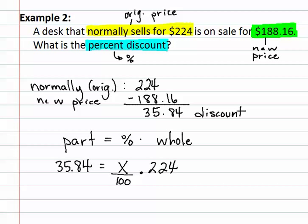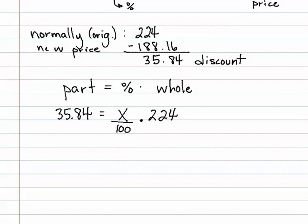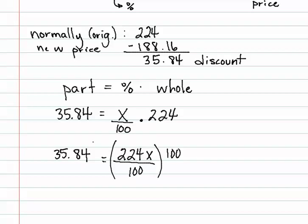We now proceed to solve this problem. As you can see, there is a fraction still here. We must multiply. When we multiply, we get 224 x over 100 equals 35.84. Remember to clear a fraction, you multiply by the least common denominator. The least common denominator in this case is 100. We will multiply both sides by 100. This will reduce out the denominator of the right side.